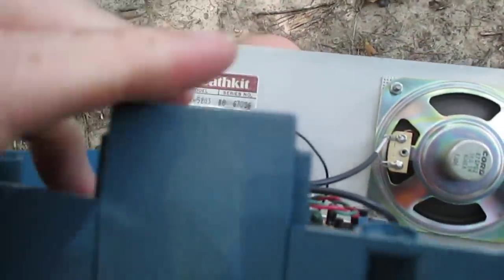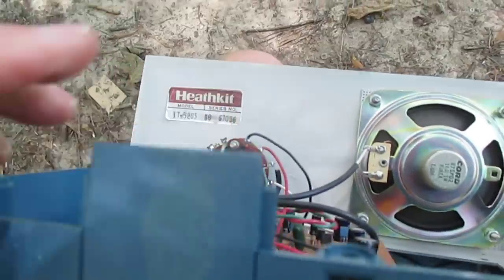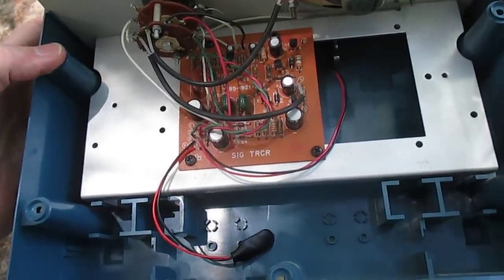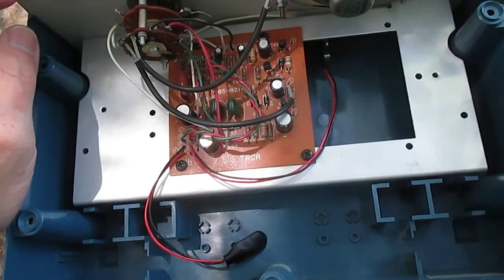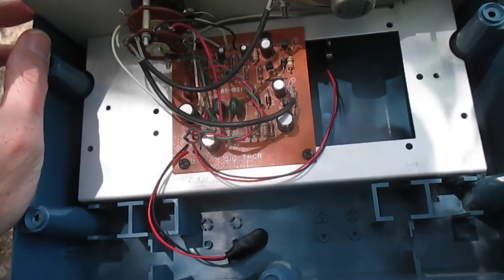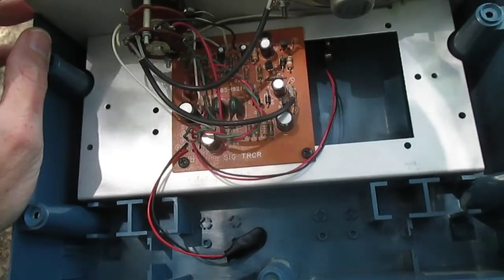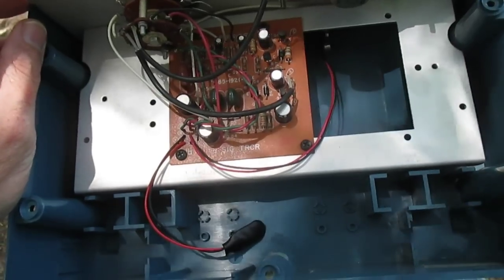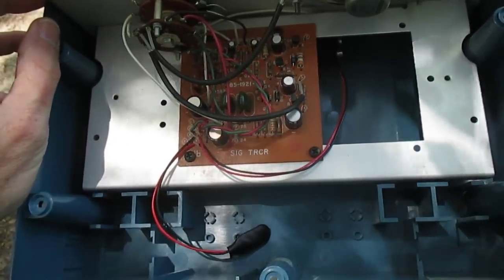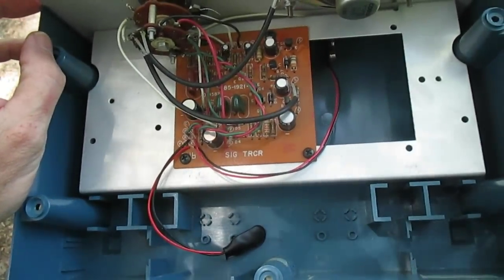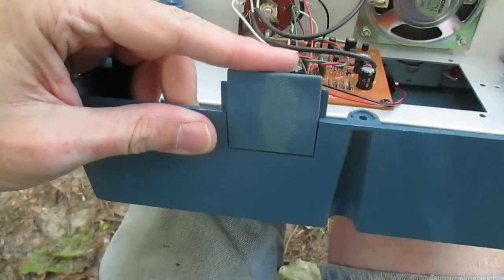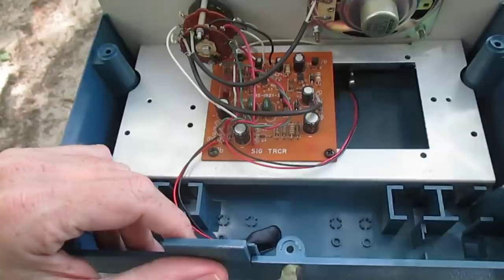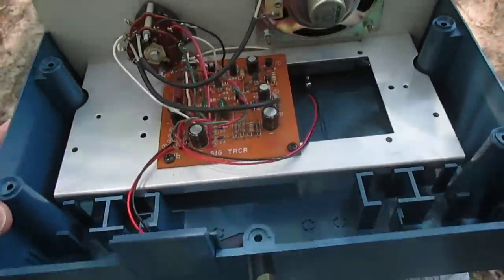This plate back here is a cover plate, a dummy plate. If you were to buy the external power supply that was designed to power this signal tracer as well as several other pieces of test equipment that was in this series including an RF signal generator, a multimeter and an audio signal generator, you can install the plate back here that had the correct molex plug for the power supply to plug into. But obviously whoever built this opted not to go for the power supply option.